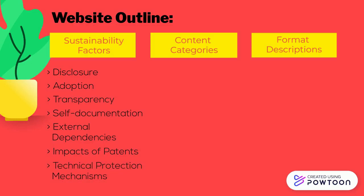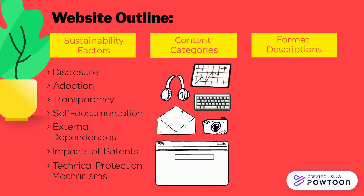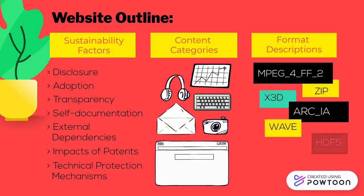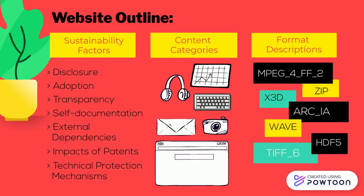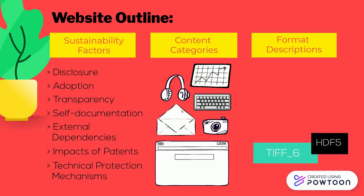The Content Categories tab provides details of media productions such as image, sound, textual, email, web archive, data sets, and more. The format descriptions are found in a separate tab. This resource provides specific information about the format options for each content category. This page also includes a link to the Library of Congress' recommended format statements.